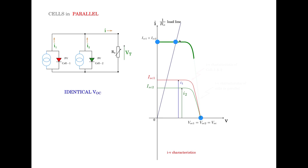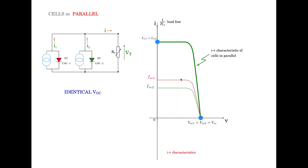I1 plus I2 will be the current height, and the voltage developed across the load will be VT. If you sweep this load line you will end up with this type of IV curve for the combined system having non-identical characteristics but an identical VOC point. This is very similar to the IV characteristic of the identical cells in parallel.